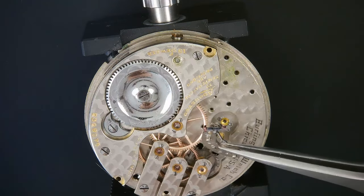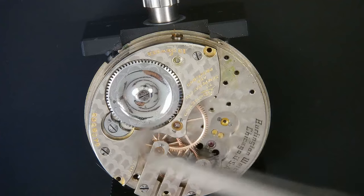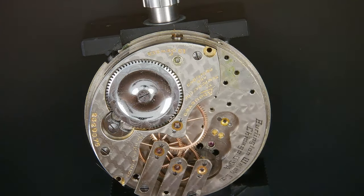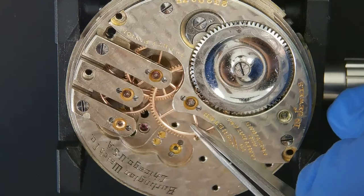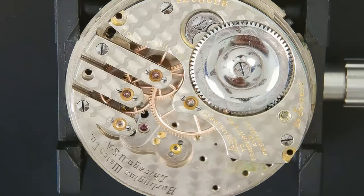Yeah, look at that. The pallet fork is stuck to its bridge. So that explains its sluggish action. Now inspecting the terrain of wheels, we can see that it moves okay.